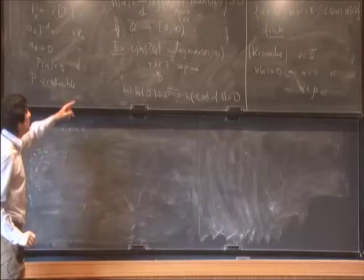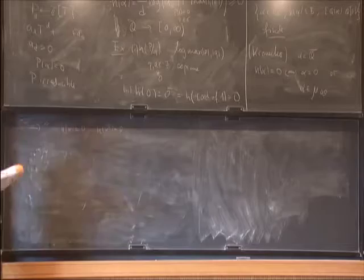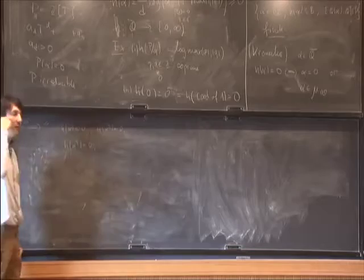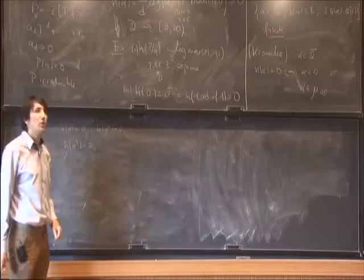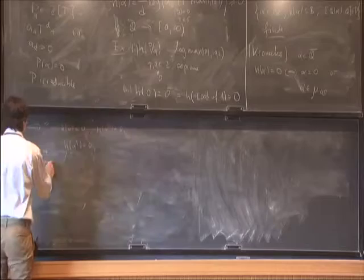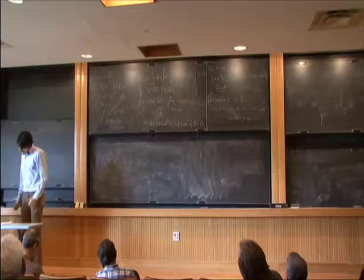Since bounded height and bounded degree implies finite, exactly two of the different powers of alpha must coincide. That's exactly what it means to say that alpha is either 0 or a root of unity. So we've established the algebraic numbers of minimal height. The next question is how small can you get, and this is also a simple example.